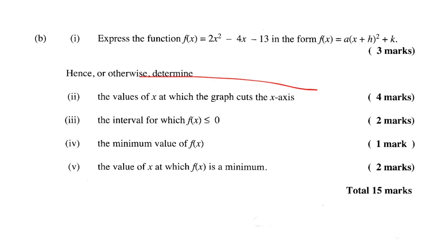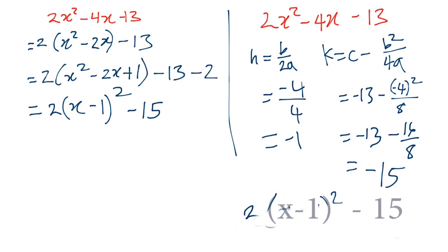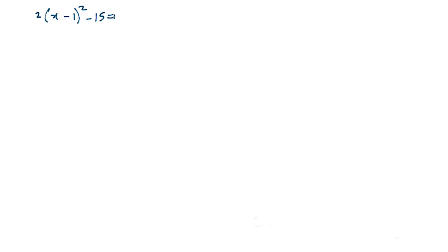Next, we are asked to find the values of x at which the graph cuts the x-axis — that's just a nice way of saying find the roots. We can use the completed square form to quickly find the roots. Let's get a new page: 2(x - 1)² - 15 = 0.